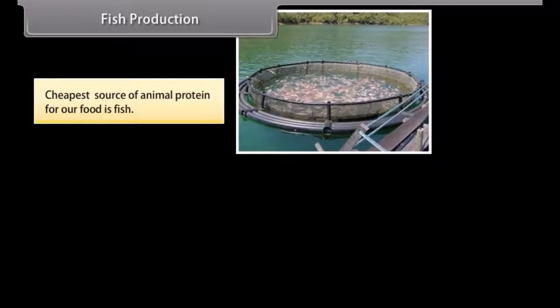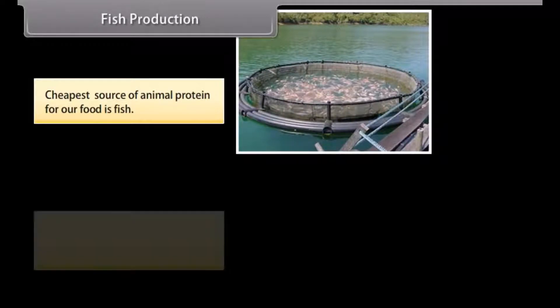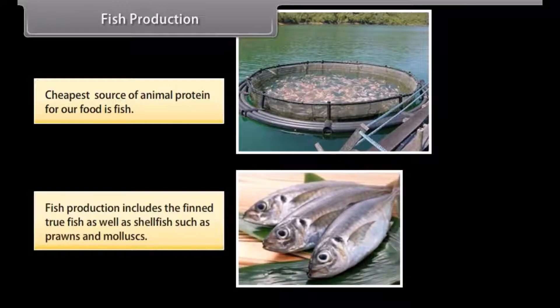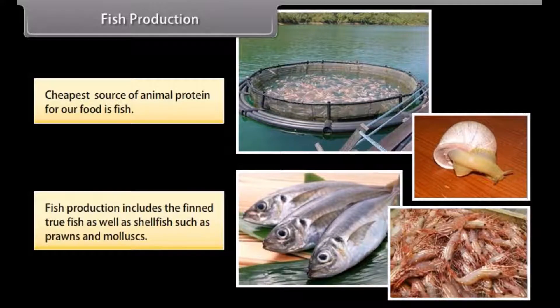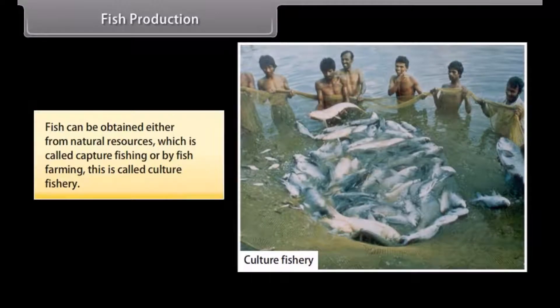Fish is the cheapest source of animal protein for our food. Fish production includes true fish as well as shellfish such as prawns and molluscs. Fish can be obtained either from natural resources, which is called capture fishing, or by fish farming, which is called culture fishery.